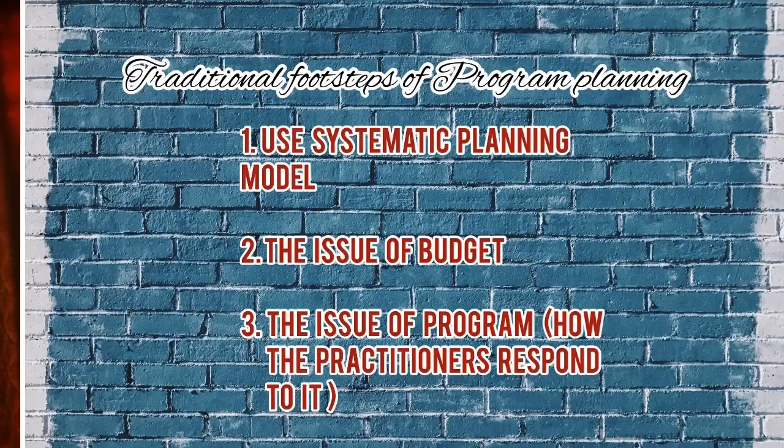According to Hansen, the traditional framework of literature continues to provide help to achieve results for program planning. We should follow the steps of the traditional program in order to achieve the maximum and to accomplish the goals of program planning. There are three steps of traditional program planning.